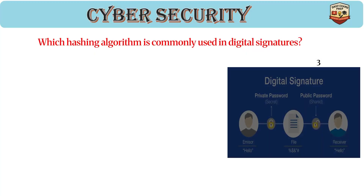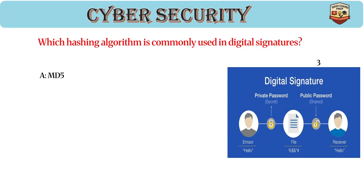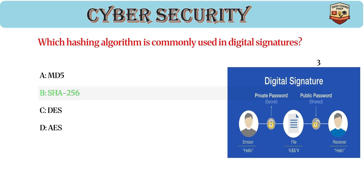Which hashing algorithm is commonly used in digital signatures? Answer: B, SHA-256. SHA-256 ensures data integrity and is commonly used in digital signatures, providing a 256-bit security level.